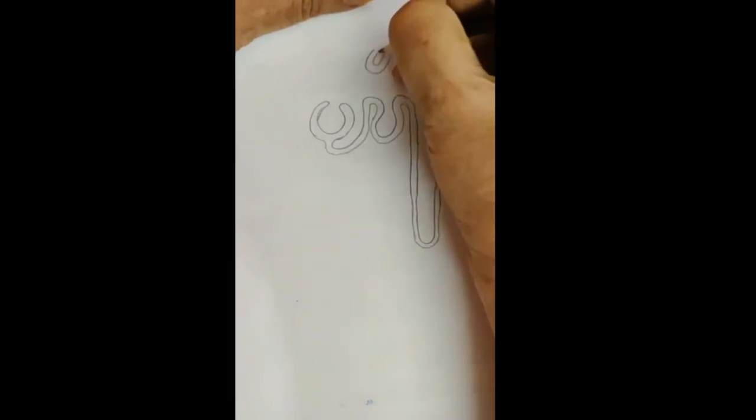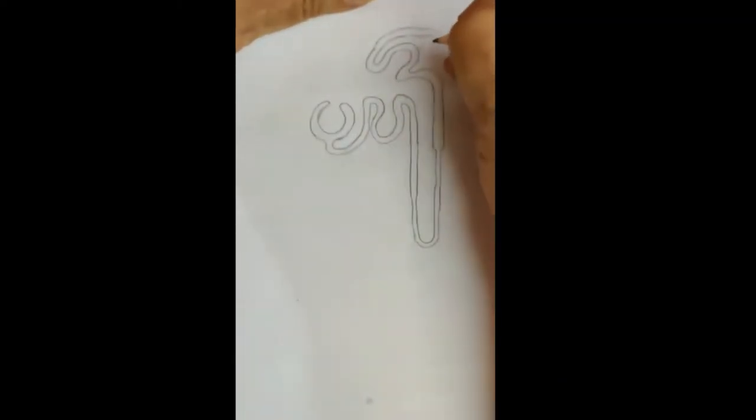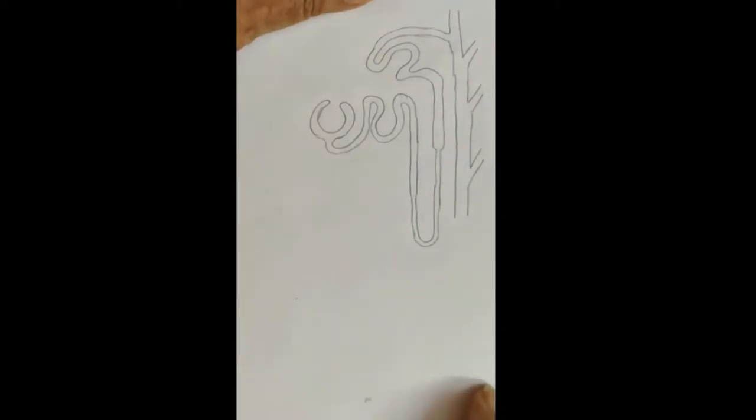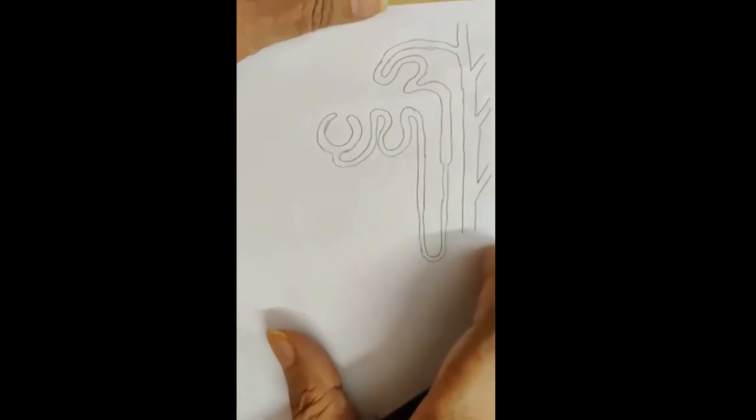Distal convoluted tubule will be joining a collecting duct. Collecting duct which will be receiving the urine from this nephron will also be receiving urine from many other nephrons. So you can show the branches joining it - some branches coming from the other side, one has come from here, some more are coming. So just show it going down with the branches being received from other nephrons.